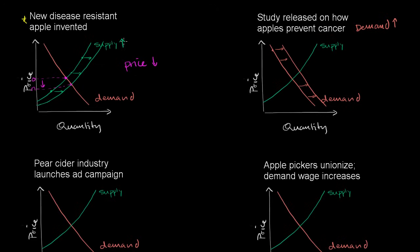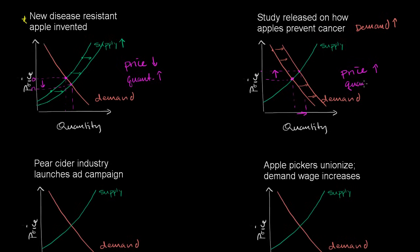In the first situation, supply went up. Here, demand goes up — and what happens to the price? This is our old equilibrium price; this is our new equilibrium price. The price clearly went up. And let's think about quantity too: in the first situation, this is our old equilibrium quantity and this is our new equilibrium quantity — quantity went up, which makes sense. You have fewer apples dying, price went down, more people want to buy them. Here, price went up and quantity also went up — more people just want to buy apples; they don't want to get cancer.